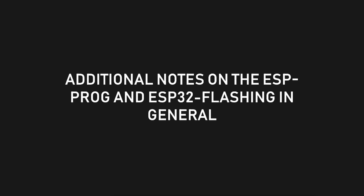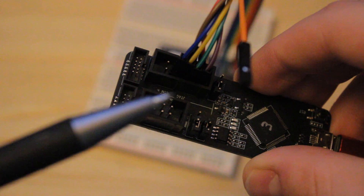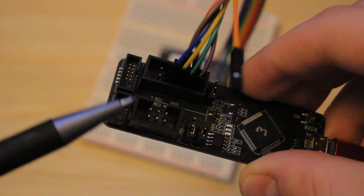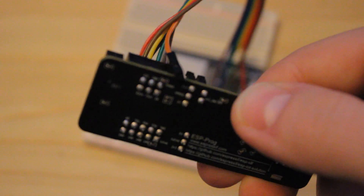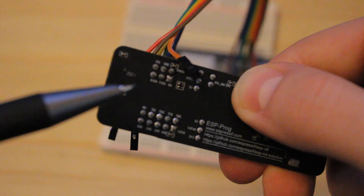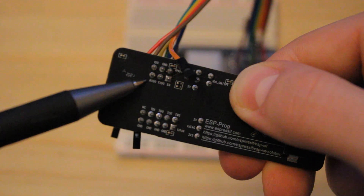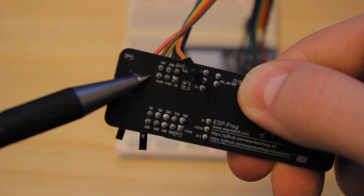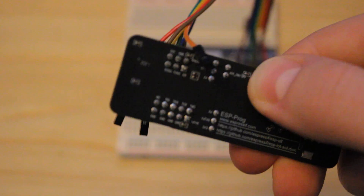Here are some additional notes on the ESP-PROG and ESP32 flashing in general. Wonder why the ESP-PROG shows up as two devices on your computer? You might have noticed a smaller patch bay next to the JTAG one on your ESP-PROG. When you turn the board around, you will see the pins TX, RX, EN, IO, GND, and VDD. This is the so-called programmer interface, and with it you do exactly what you would normally do with an ESP32 directly connected to a USB cable — flashing it.